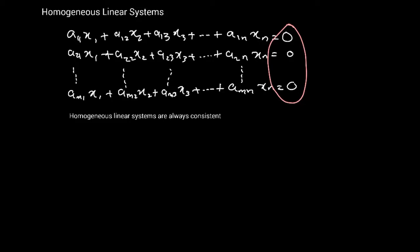Therefore, a homogeneous linear system could either have a unique solution or infinitely many solutions. But keep in mind that the only possible unique solution to a homogeneous linear system is one where all the variables are zero, and we call that the trivial solution.